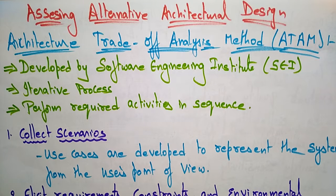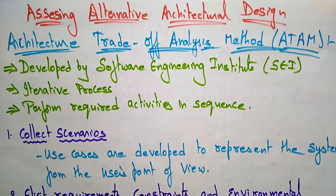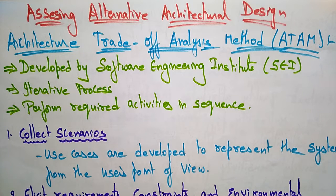Hi students, let us continue with assessing alternative architectural design. In the previous video, I gave a basic idea about how to assess an alternative architecture. First, you have to identify the different styles which depend upon the requirements. After that, you have to combine all the different styles and from that derive a new design that best fits your requirements. That is an alternative design.